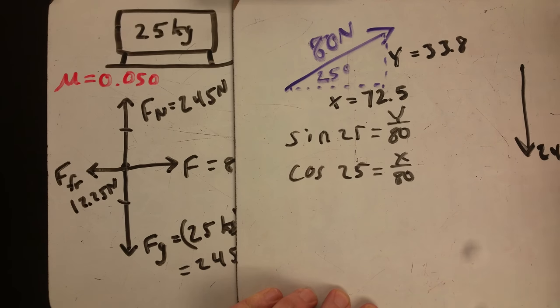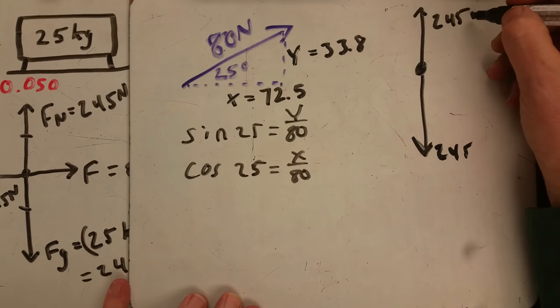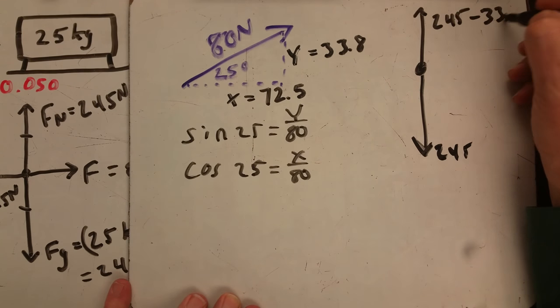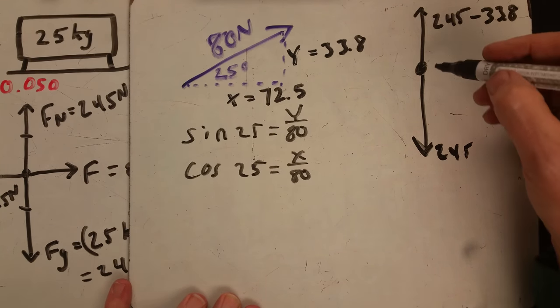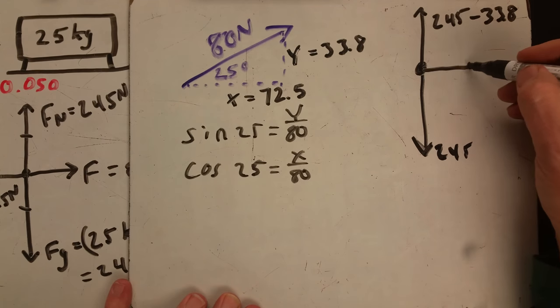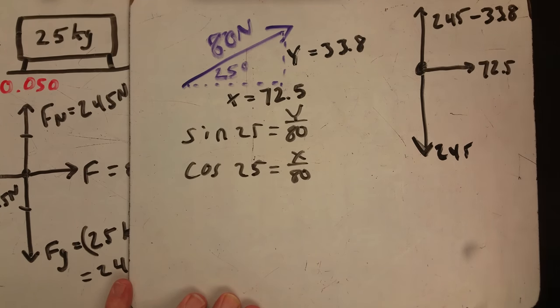But now going up, we have the normal force is 245 minus our 33.8, and our pull here is now only 72.5.